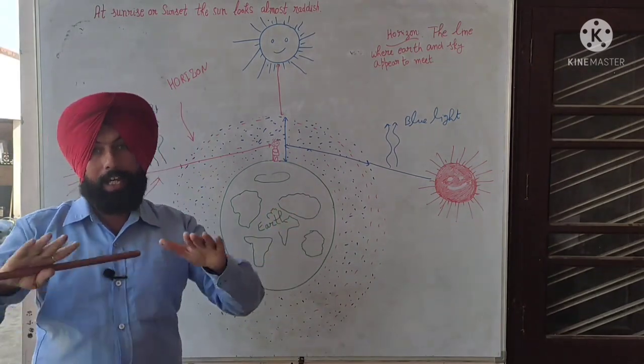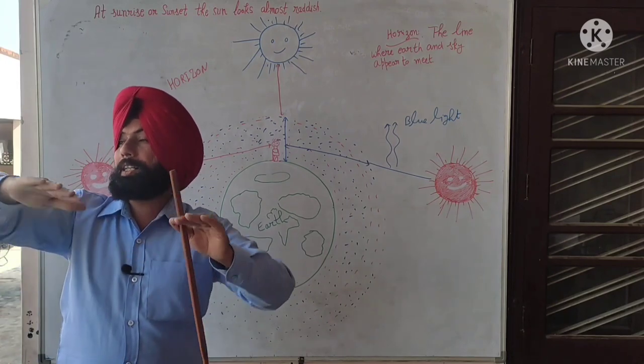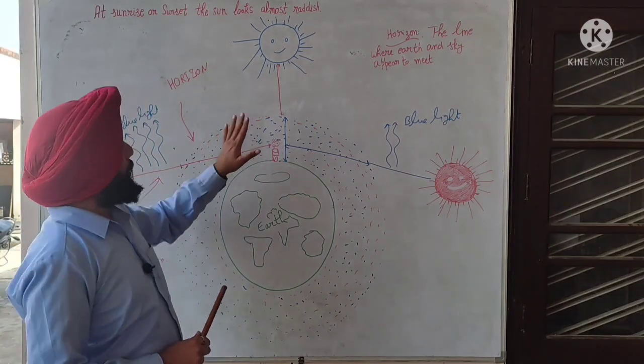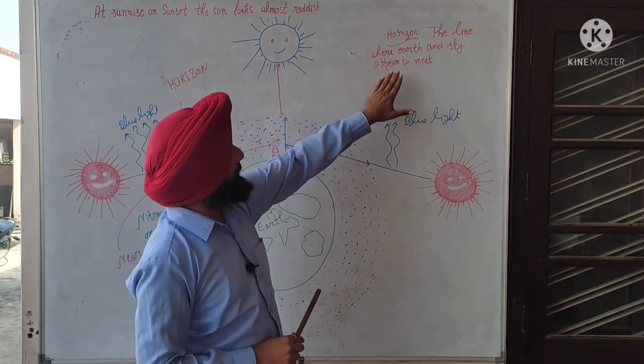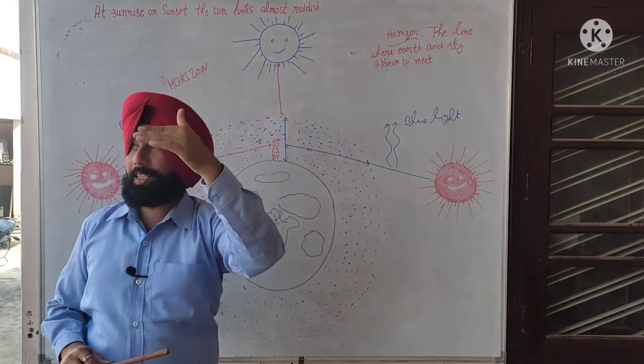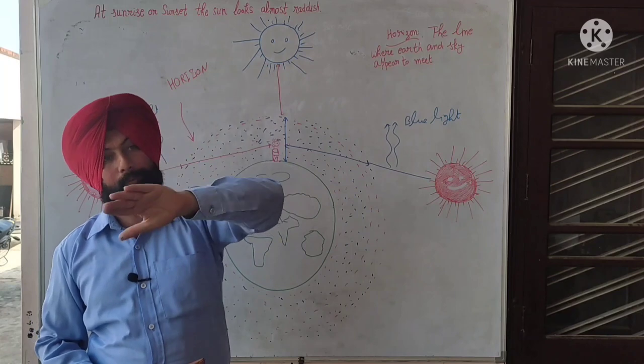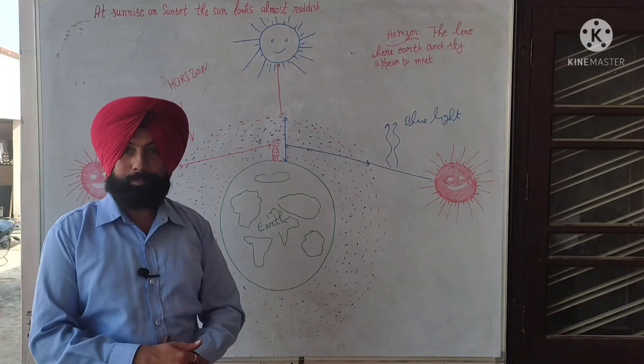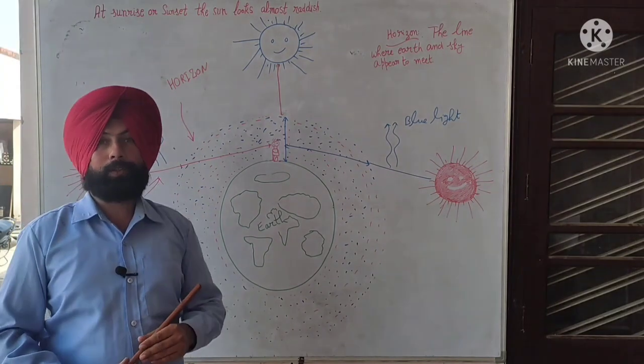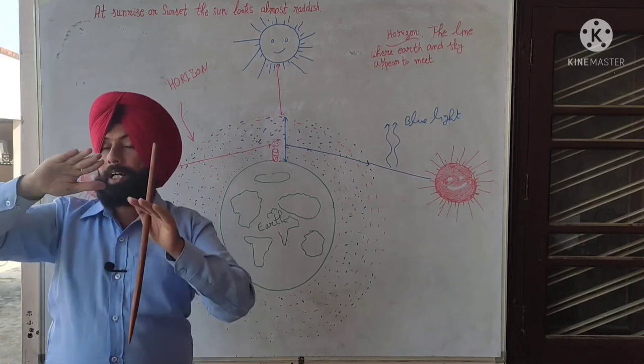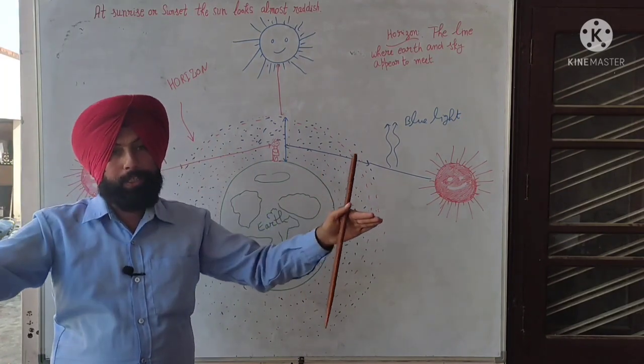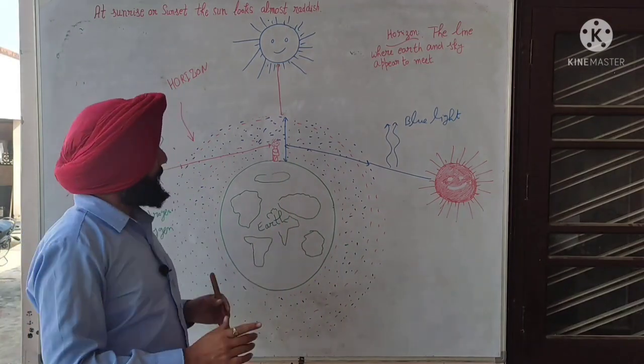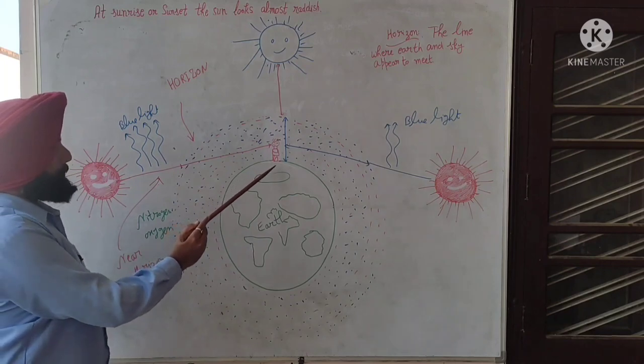When we see the sky and the atmosphere on the earth surface, the line where earth and sky meet, that is the horizon. The line where the earth and sky meet is the horizon.